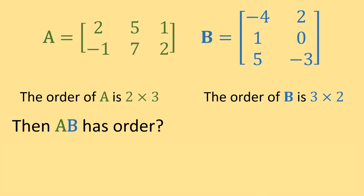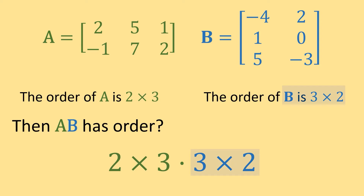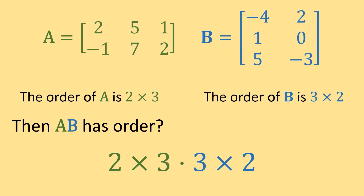To determine the order of matrix A times matrix B, we write out their orders side by side: 2 by 3 and 3 by 2. Notice these threes — the columns of matrix A and the rows of matrix B agree; they're both 3. Whenever you're doing matrix multiplication, these interior numbers have to agree. Since they do here, we can multiply these matrices.